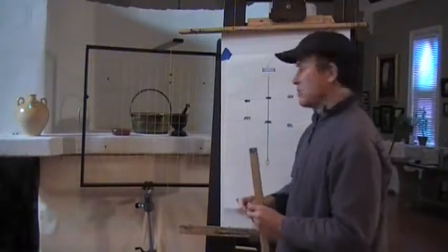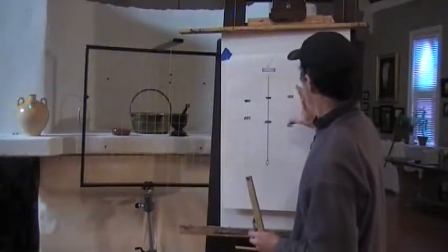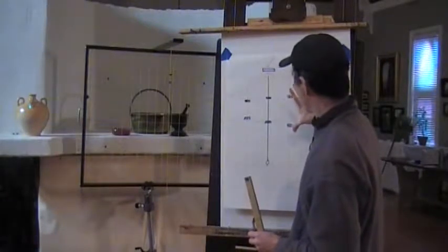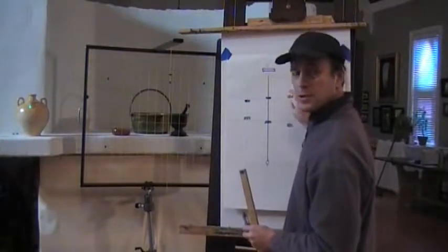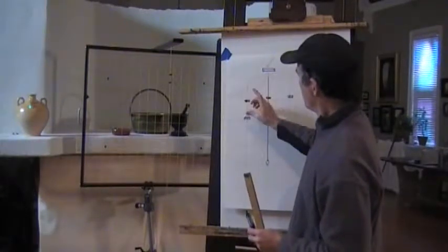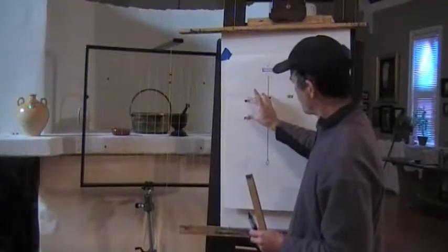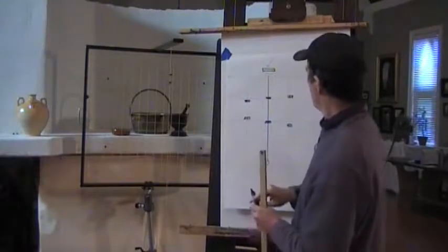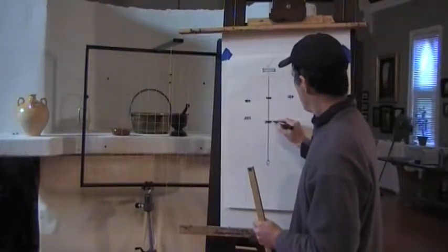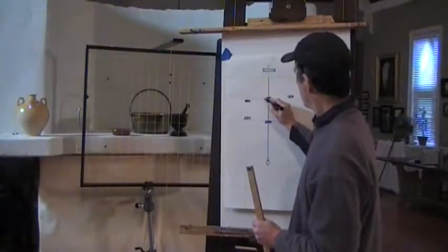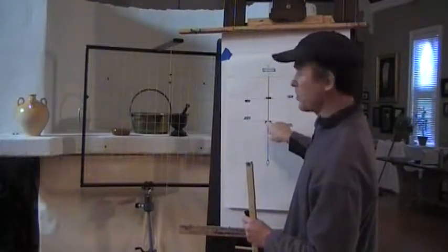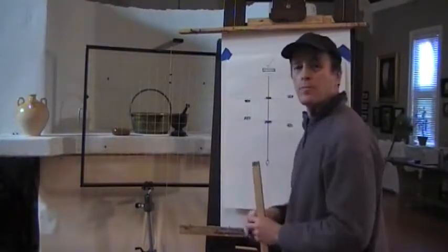You don't want to start to see the line markers getting bigger than the given square that's out there. Neither do you want the square to swallow up the line markers. You want to see the horizontal lines of that square just touching the top of this line marker and the bottom of that line marker.